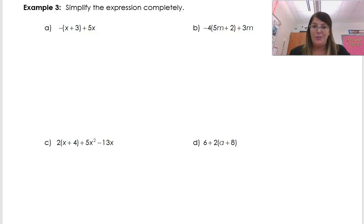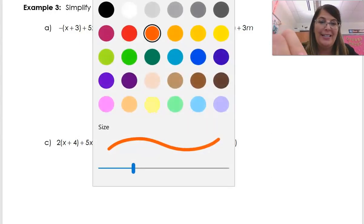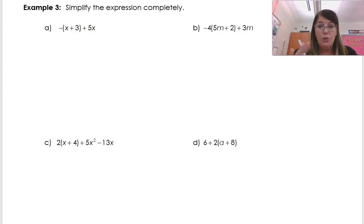So now, all of a sudden, we are distributing and we're combining like terms. So it's still pretty straightforward, I hope. So today, we're going to talk about doing distributing and combining like terms all at once. Then we're going to do an application with perimeter and an application with area for that.